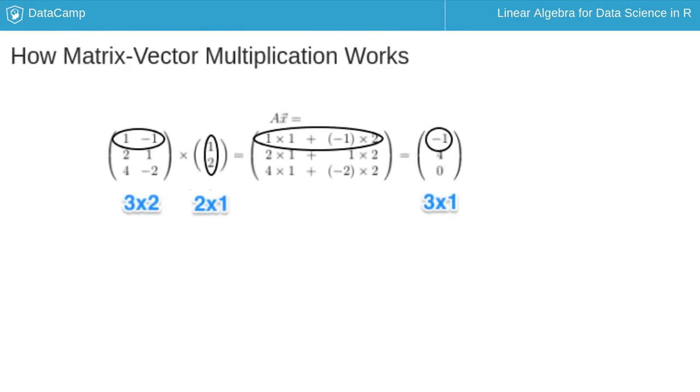The ith element of a matrix vector multiplication is the element formed by component-wise multiplication of the ith row of a given matrix by the given vector and summing the results as shown here. Here the row is multiplied by the vector to make the element of the resulting vector.